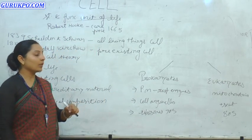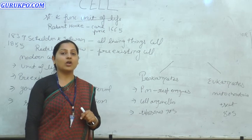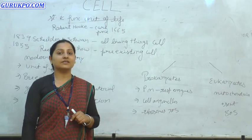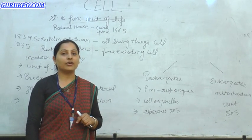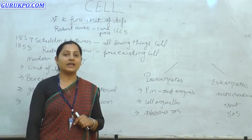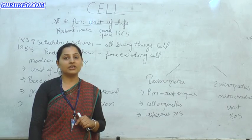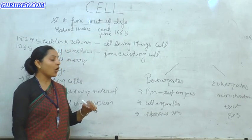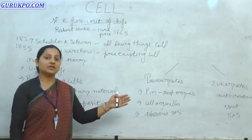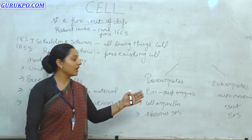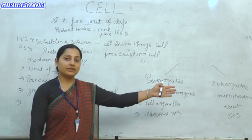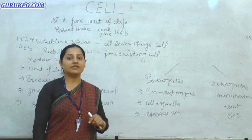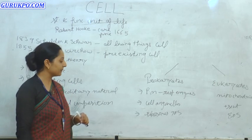The second difference is that in prokaryotes, all unit membrane-bound organelles — such as mitochondria, Golgi body, endoplasmic reticulum, lysosome, and peroxisomes — are absent. In eukaryotes, on the other hand, all these cell organelles are present.